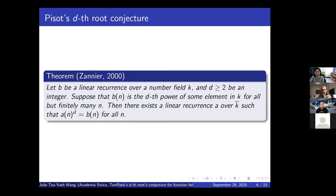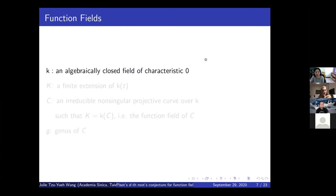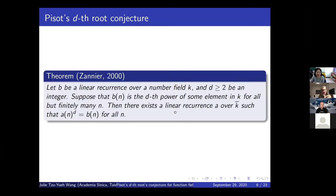Let's begin with the Pisot root conjecture. Start with a linear recurrence over a number field k, where d is a positive integer greater than two. Suppose each term is a d-th power of some element in k for all but finitely many n. Then you can find another linear recurrence a over the algebraic closure of k such that b_n equals a_n to the d-th power for all n. I want to highlight that for the number field case, you need the assumption that b_n is a d-th power for all but finitely many n, whereas for function fields we can do better.